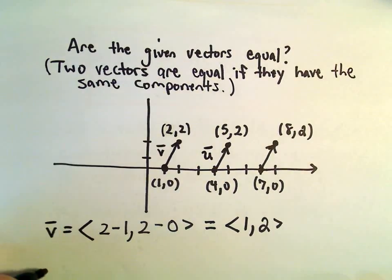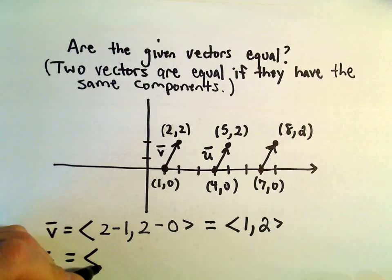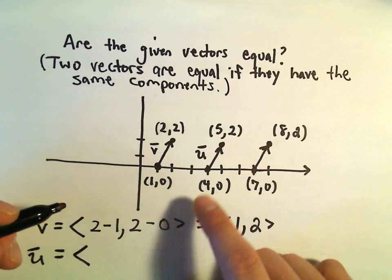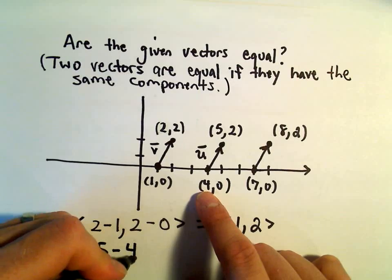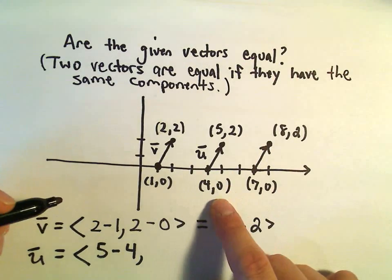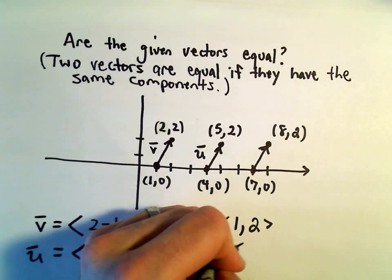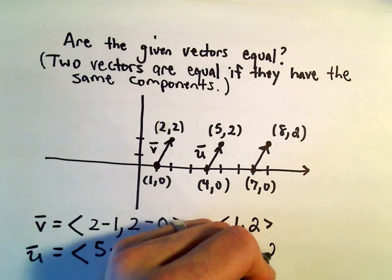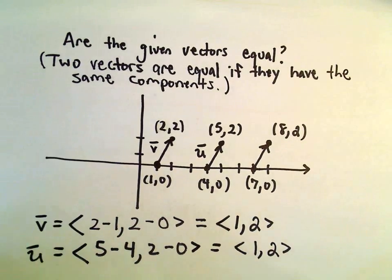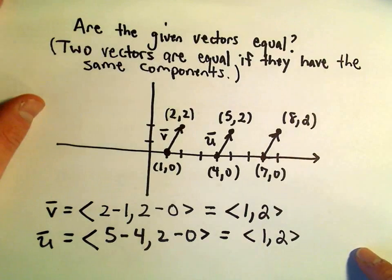I'll call the next one vector u. Notice I think the same thing is going to happen. If we subtract the x-coordinates, we'll get 5 minus 4. If we subtract the y-coordinates, we'll get 2 minus 0. So that vector has components (1,2). So vector v and vector u are considered exactly equal. They're the same vector.